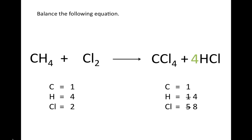Comparing the atoms on each side now: we still have one carbon atom on each side and four hydrogen atoms on each side, but on our product side we have eight chlorine atoms while on our reactant side we only have two. So in order to balance our chlorine, we're going to add a four-coefficient in front of our Cl2 molecule. With four molecules of Cl2, we now have eight chlorine atoms on our reactant side.